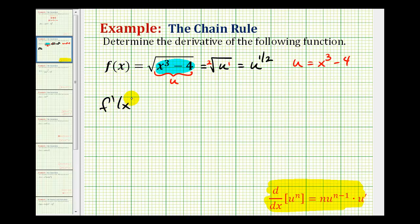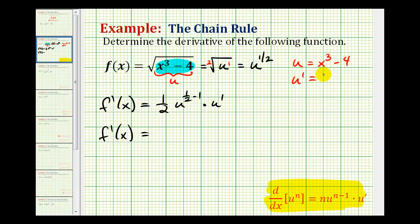So f'(x) is going to be equal to the derivative of u^(1/2), which is (1/2)u^(1/2 - 1) times u prime. Now we need to rewrite this derivative in terms of x rather than u. We'll replace u with x³ - 4, and replace u prime with the derivative of u, which would be 3x². So we have (1/2)(x³ - 4)^(-1/2) times 3x².